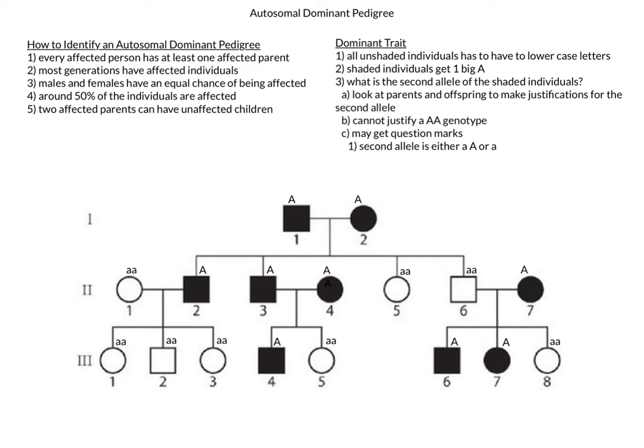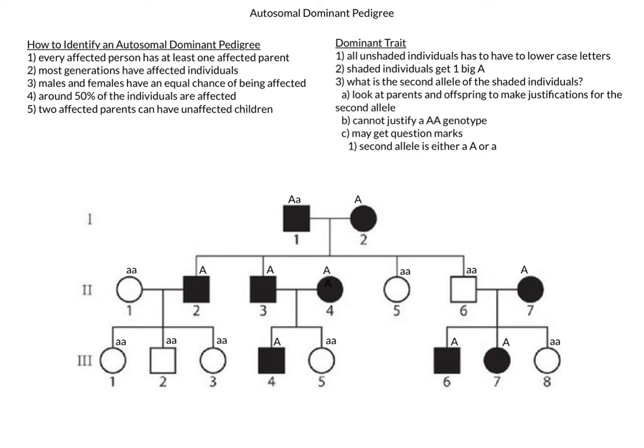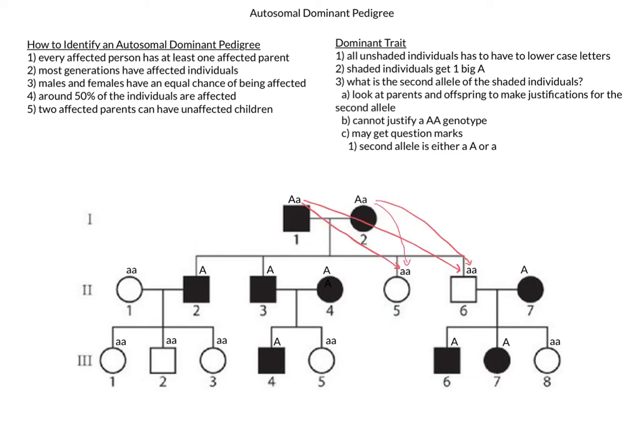Let's start with individual 1-1. This individual does not have parental information, so we look at the children instead. From this we can determine that he has to be heterozygous, or big A little a. This is because of individual 2-5 being homozygous recessive, which means that individual 2-5 had to have received one recessive allele from both her mom and dad. And as such, individual 1-1, the father in this case, has to be heterozygous to be able to pass on the recessive trait.